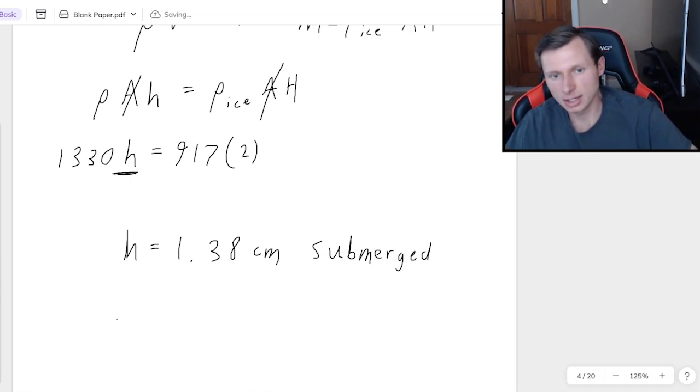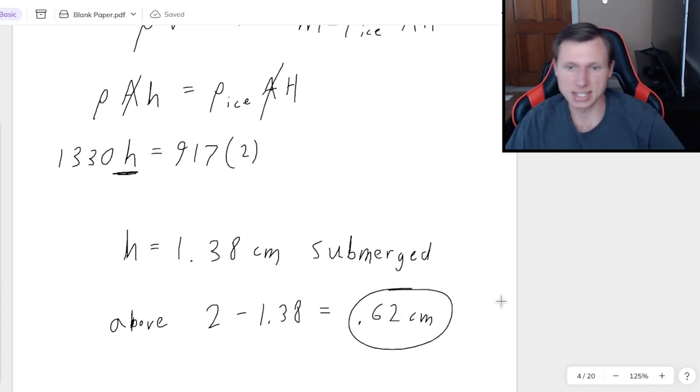Which means the height above is going to be 2 centimeters, the total, minus 1.38, giving me a final answer of 0.62 centimeters. That's how much is above. Which by the way is going to be more as a percentage than water, and the reason for that is maple syrup is much more dense than water, so it's going to float more easily.